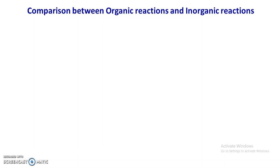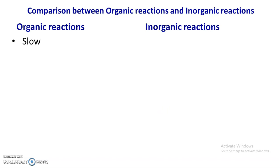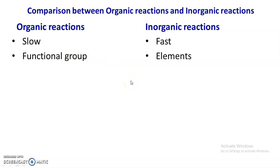Due to the catenation tendency of carbon, organic molecules are complicated with high molecular weight, whereas inorganic molecules are comparatively simple and have less molecular weight, except organometallics and coordination compounds. Organic reactions are slow and require a catalyst, whereas inorganic reactions are comparatively fast. The reactivity and course of an organic reaction depends upon the functional group, whereas functional groups are absent in inorganic compounds, and therefore their reactivity depends upon the properties of their elements.